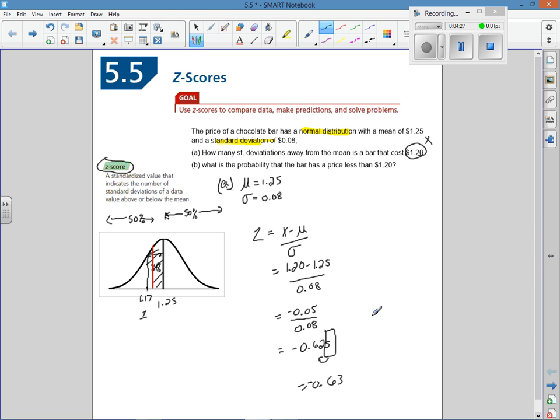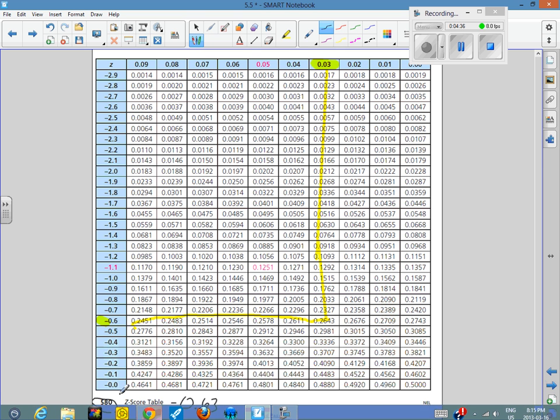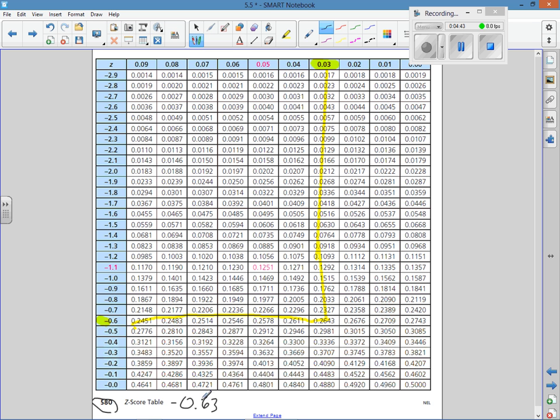To find the probability in that area, we use what's called the Z-score table on page 580 of your text. You find your first value, which is negative 0.6, and your second value, which is 0.03. You trace both values down and look for the intersection. The intersection is right here: 0.2643.